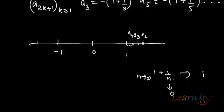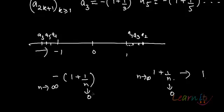Similarly, your terms which are basically -4/3—somewhere here is your a_3, then your a_5 will be somewhere here, a_7 will be somewhere here, moving towards -1 actually. Basically, you have terms -(1 + 1/n), and as n tends to infinity, 1/n will be 0, so this will tend to -1.